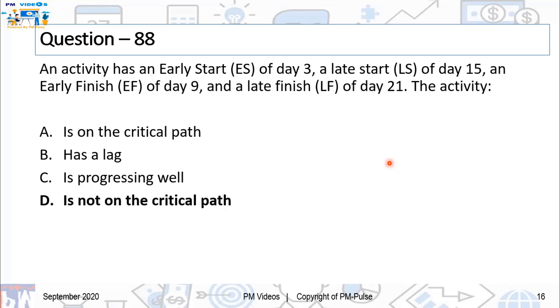And the correct answer is, it is not on critical path. You see, all you have to know is that if there is a difference between late start and early start, they are not the same date. That means they are not on critical path because the calculation of float is late start minus early start or late finish minus early finish. And if it is zero, it is on the critical path. But right now, we can see it is not on the critical path. And therefore, the value is not zero.